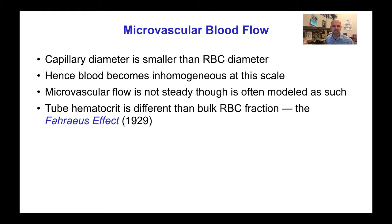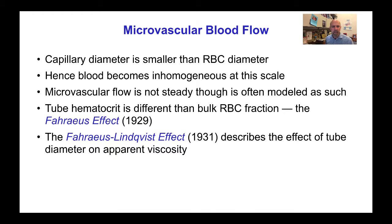Some interesting characteristics of microvascular flows include the observation by Fåhræus in 1929 that the hematocrit measured in a thin tube is different from the bulk red blood cell fraction of the reservoir supplying the blood to the thin tube. Another unusual phenomenon described by Fåhræus in 1931 describes the effect of tube diameter at small scales on the apparent viscosity — it actually goes down as the tube diameter decreases, at least to a point.